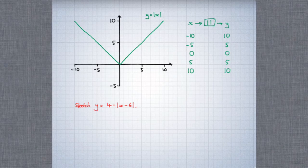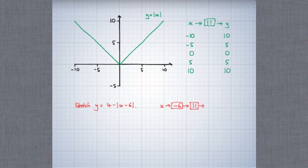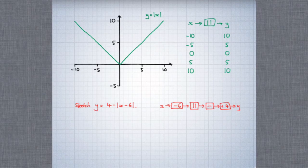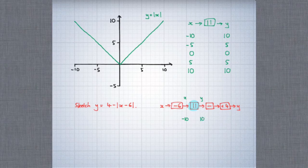Here's the function diagram. We start with x. The first thing that happens is we subtract 6 from x. Then we find the modulus of that. The next step is we need to make whatever we get negative, before finally we add 4 in order to get the y-coordinate. As with the previous examples, the original graph illustrates this part of the diagram. On the original graph, the x-coordinates were the input to the modulus function, and the y-coordinates were the output. So when x was minus 10, y is 10; when x is minus 5, y is positive 5, and so on.